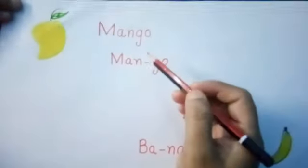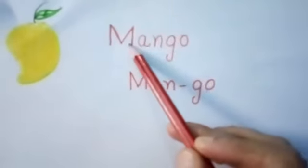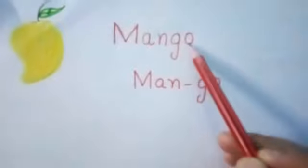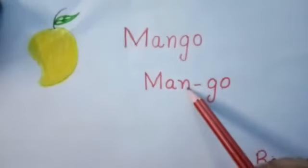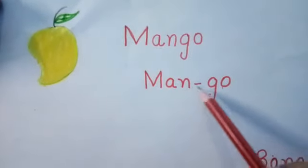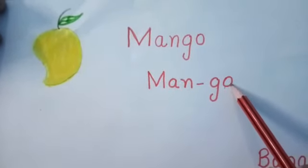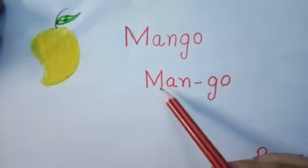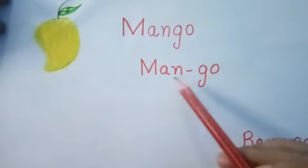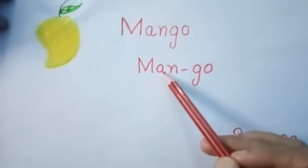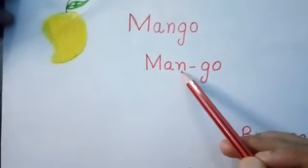So look over here. This is mango. We can divide it into two parts. M, A, N — man. G, O — go. This is a three-letter word and this is a two-letter word.